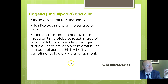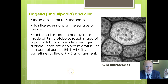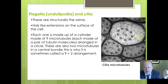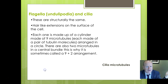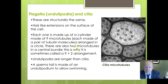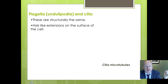Microtubules and microfilaments also provide the structure for flagella and cilia. Looking at cilia and undulipodia, you can see the nine-plus-two structure: two single microtubules in the centre and nine pairs of tubules around the outside. Undulipodia are longer — for example, a sperm tail — allowing side-to-side swimming. Cilia are much shorter, found for example in the trachea wafting substances along, and in the fallopian tubes moving eggs.